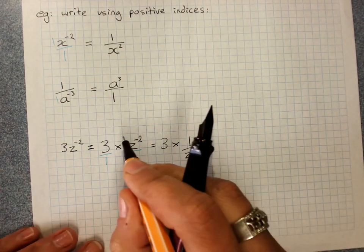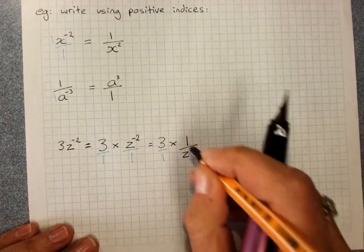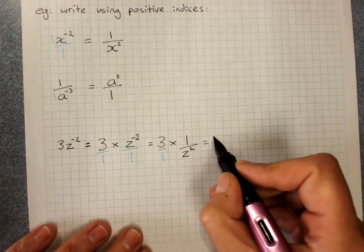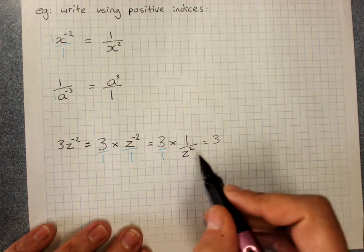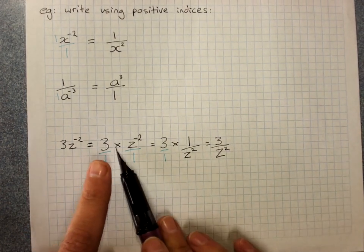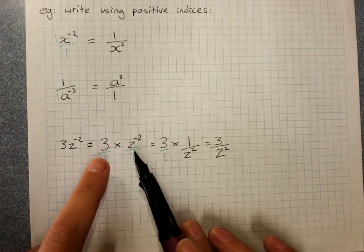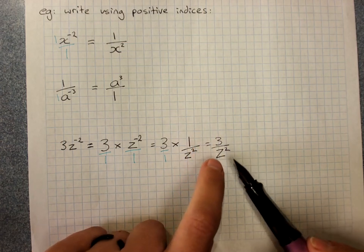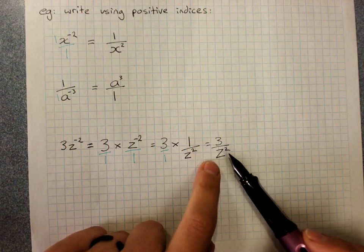If you're not certain about a whole number times a fraction, this is 3 over 1. 3 times 1 is 3. 1 times z squared is z squared. By separating it out, you've really supported yourself to work out that the 3 ends up on the top and the z squared ends up on the bottom.